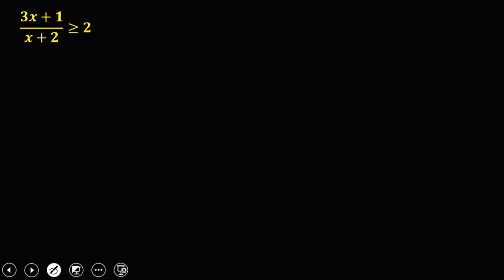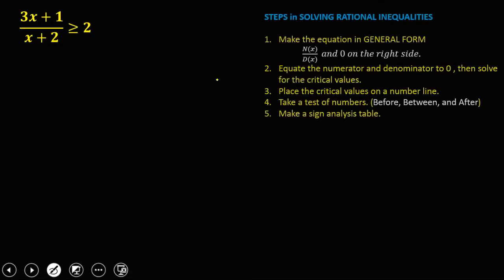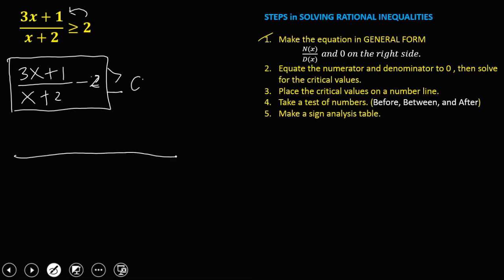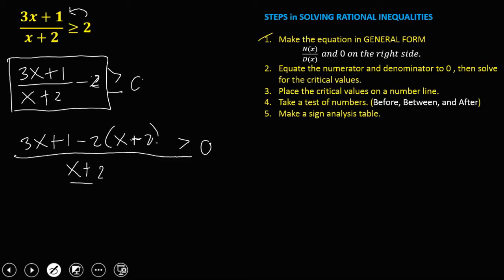Let's have another problem. First, we need to write this equation in general form. Transpose positive 2 to the left side, giving us 3x plus 1 over x plus 2, minus 2, greater than or equal to 0. Then simplify — the LCD is x plus 2. Bring down the first term, 3x plus 1, then minus 2 times the denominator x plus 2, greater than or equal to 0.